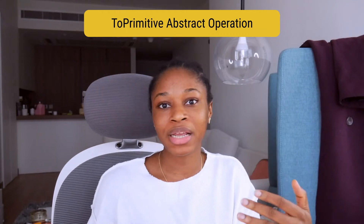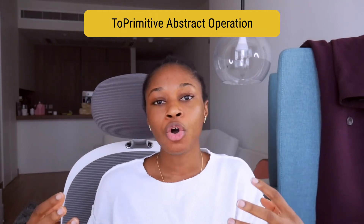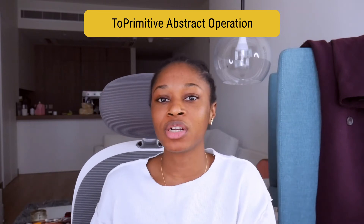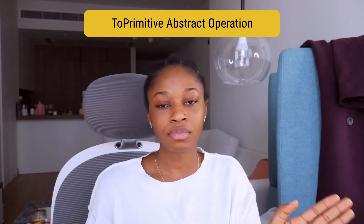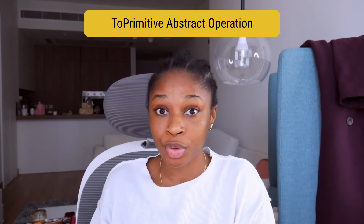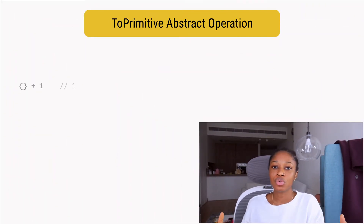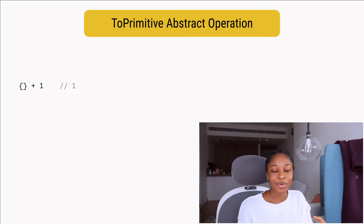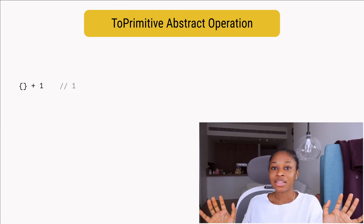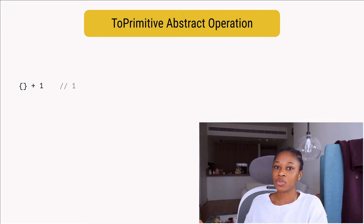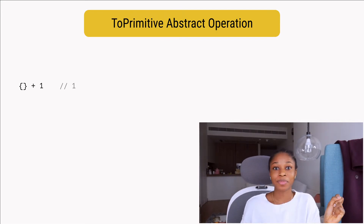Whenever coercion occurs, whether implicit or explicit, one or more internal operations known as abstract operations are performed. Now let's talk about the ToPrimitive abstract operation. When a non-primitive value is used in a context that requires a primitive value, the JavaScript engine invokes the ToPrimitive abstract operation.